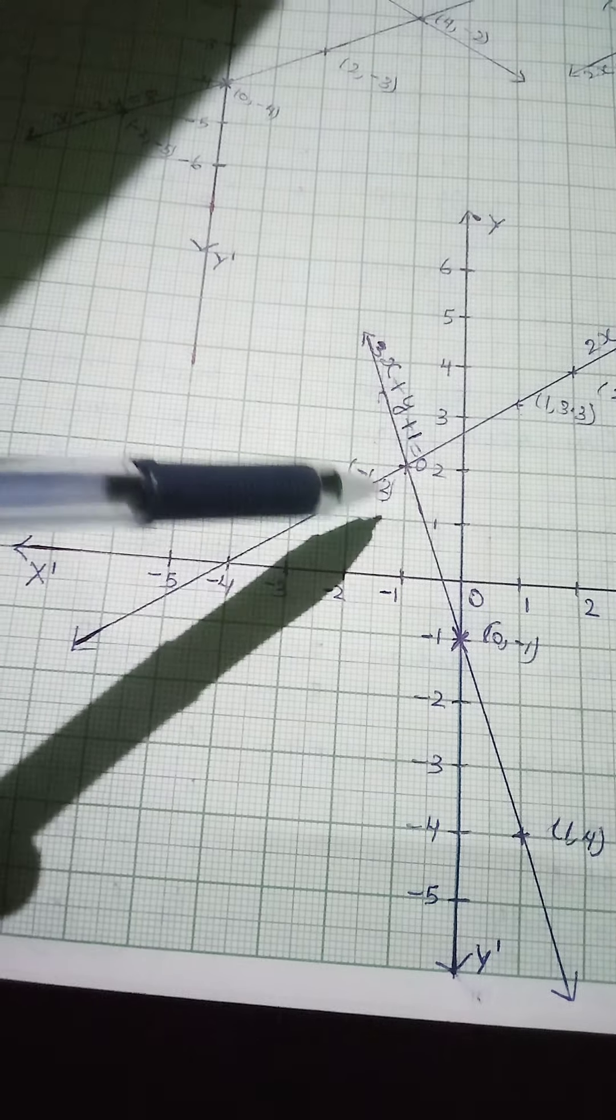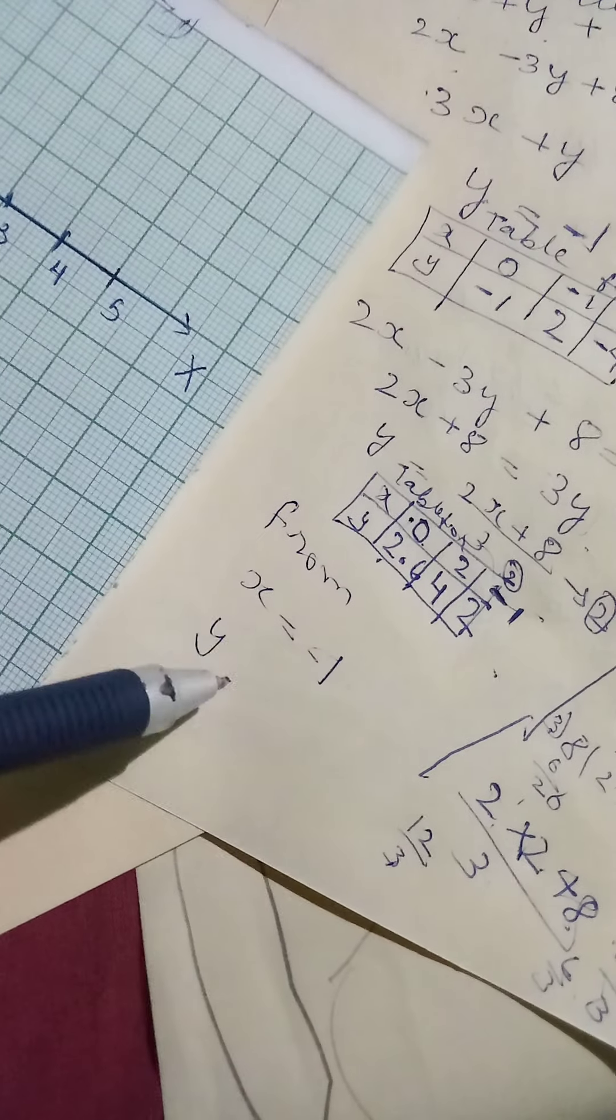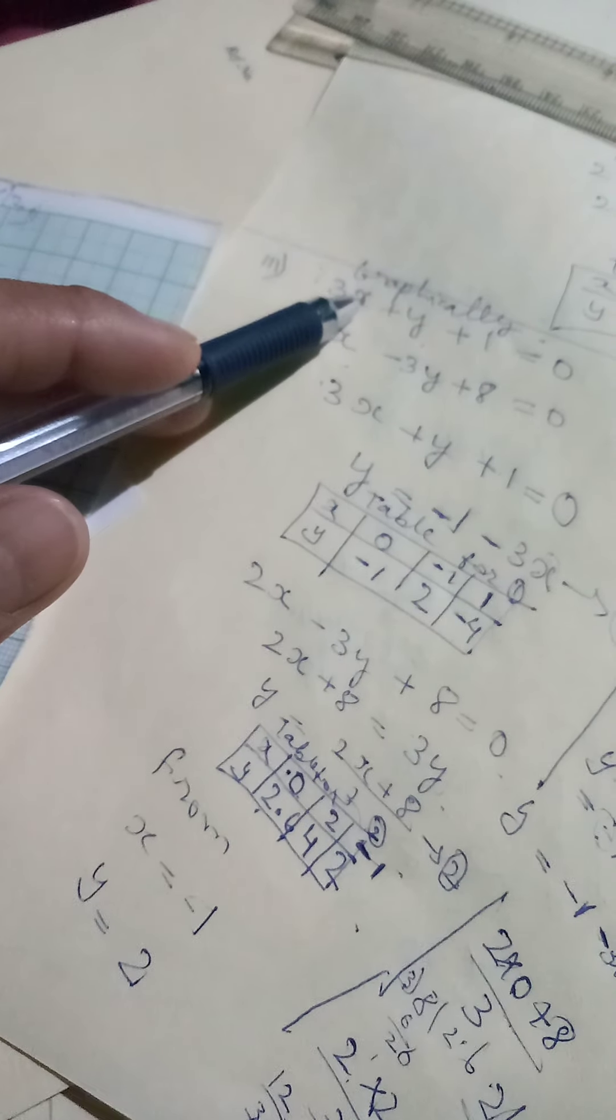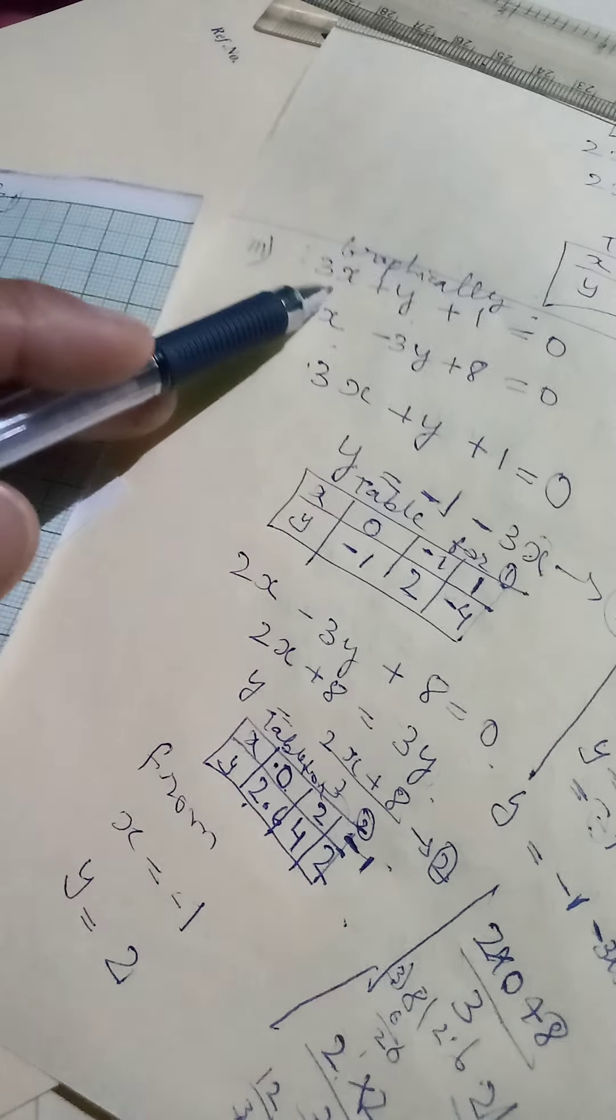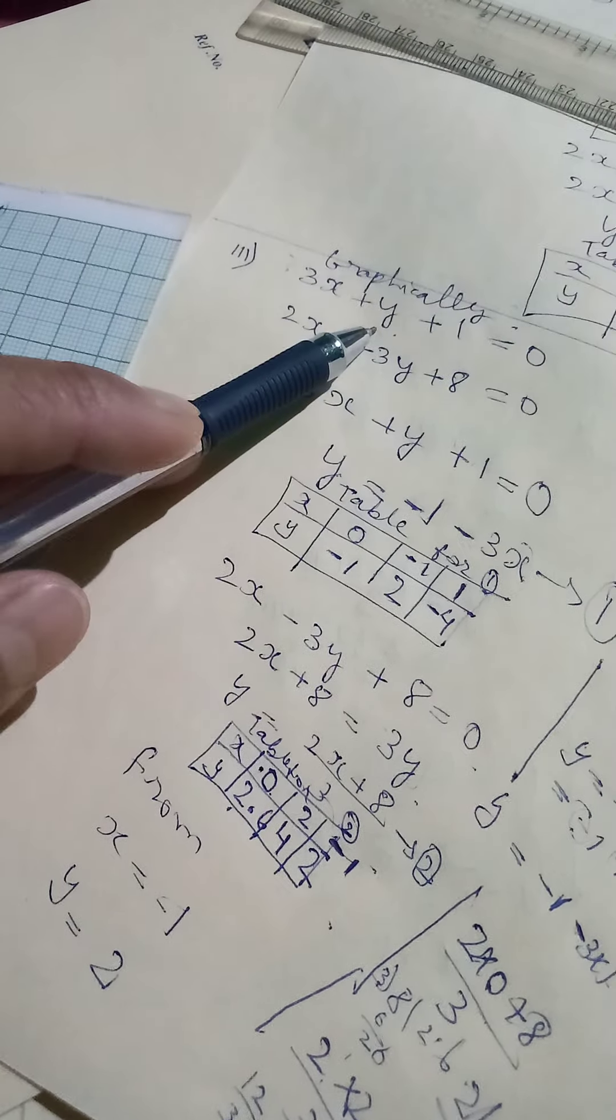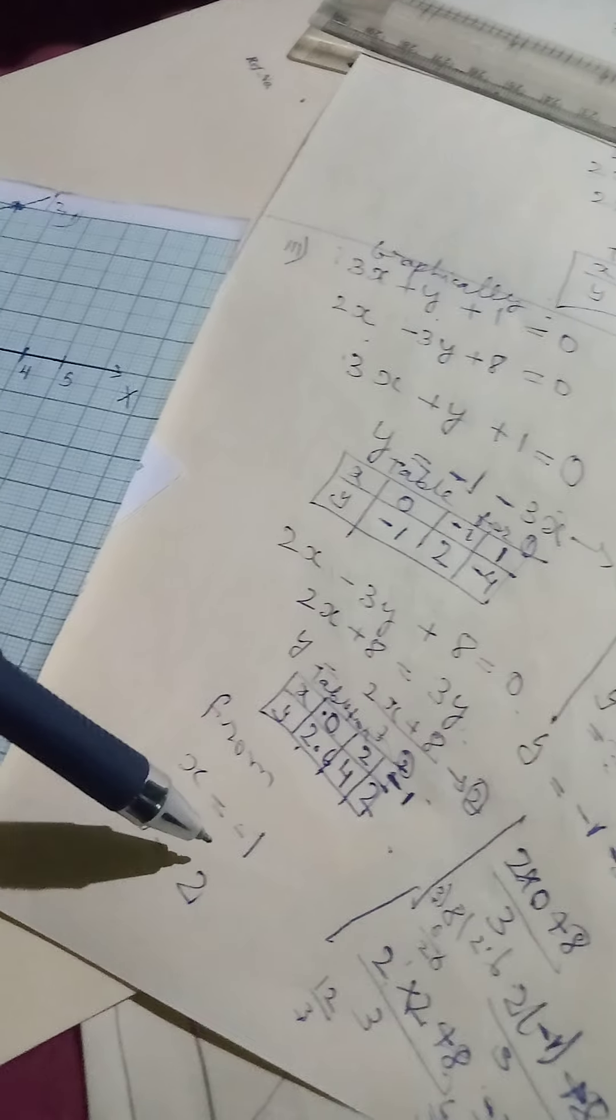So here you can write that from the graph, X equal minus 1, Y equal to 2. So you can check it here, correct or not. 3 into minus 1 will be minus 3, then plus 2. So minus 3 plus 2 will be minus 1. Minus 1 plus 1 will be 0. It does here also is correct. So the final answer is this one.